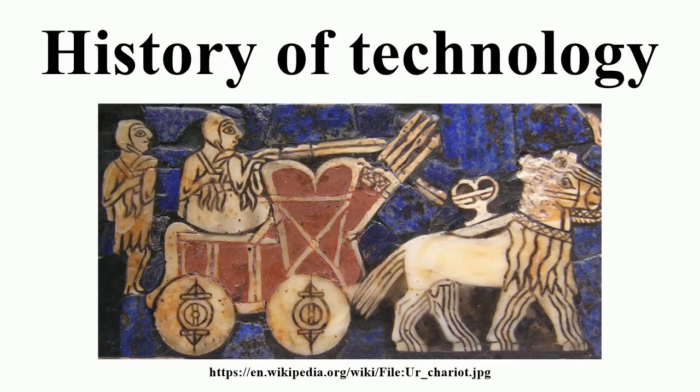Lensky also differentiates societies based on their level of technology, communication, and economy: hunter-gatherer, simple agricultural, advanced agricultural, industrial, and special. In economics, productivity is a measure of technological progress. Productivity increases when fewer inputs are used in the production of a unit of output. Another indicator of technological progress is the development of new products and services, which is necessary to offset unemployment that would otherwise result as labor inputs are reduced.